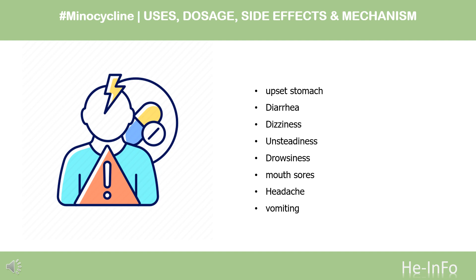It has also been linked to cases of lupus. Prolonged use of minocycline can lead to blue-gray staining of skin, fingernails, and scar tissue. This staining is not permanent, but can take a very long time for the skin color to return to normal. However, a muddy brown skin color in sun-exposed areas is usually permanent.